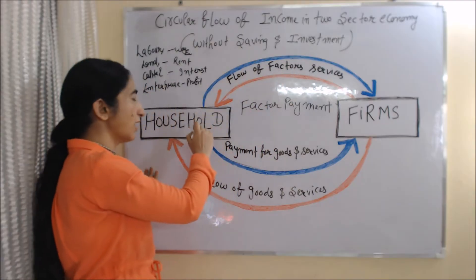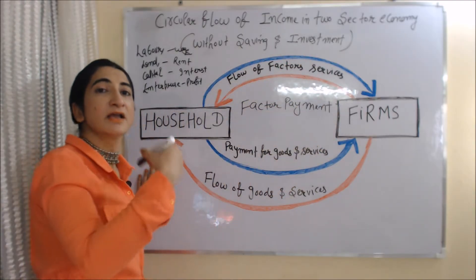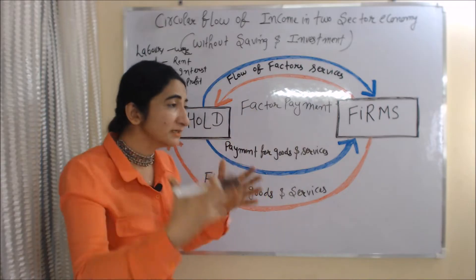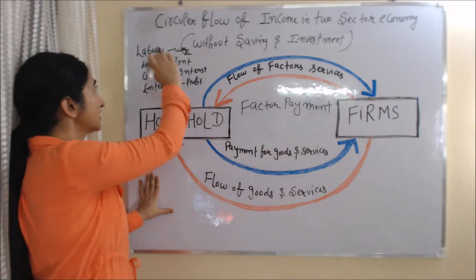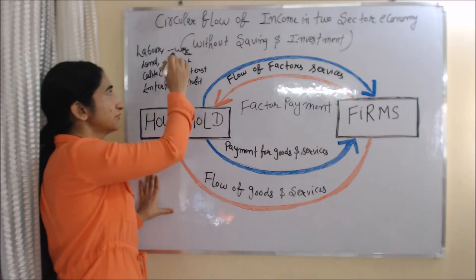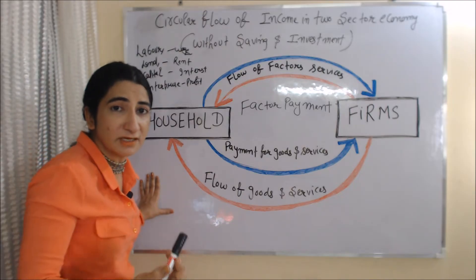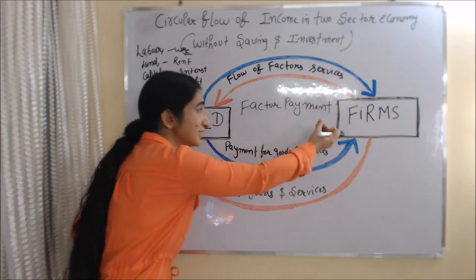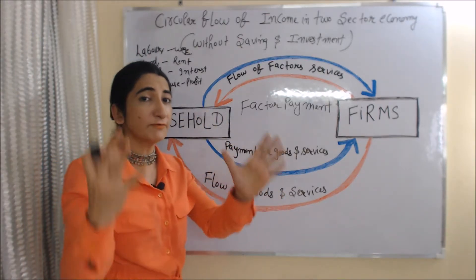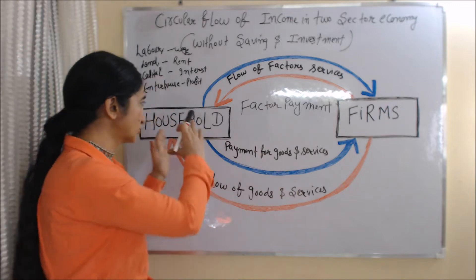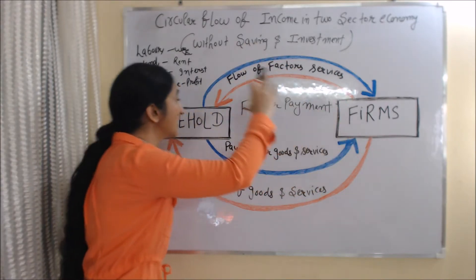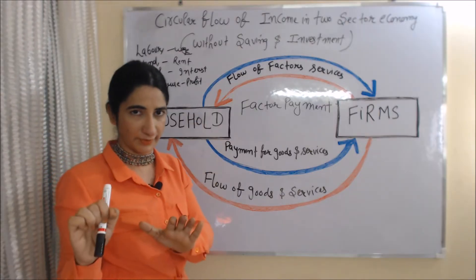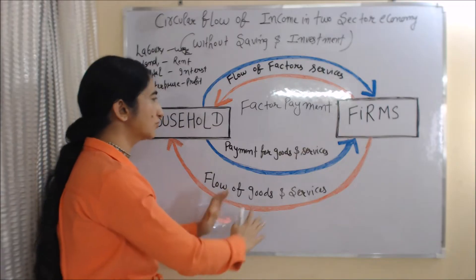You can see here the flow of factor services going from household sector to business firms. When the household sector gives their factor services to business firms, in return they receive factor payment. If they give labor, they receive wages. If they give land, they receive rent. If they give capital, they receive interest. And if they give enterprise, they receive profit.